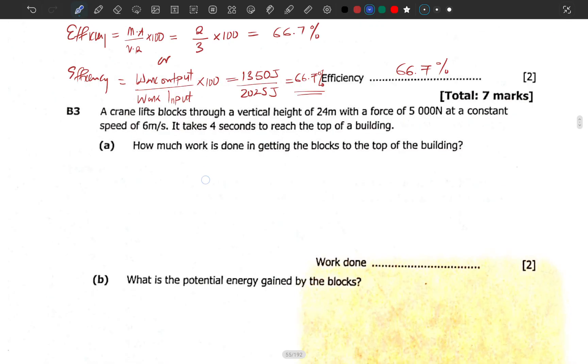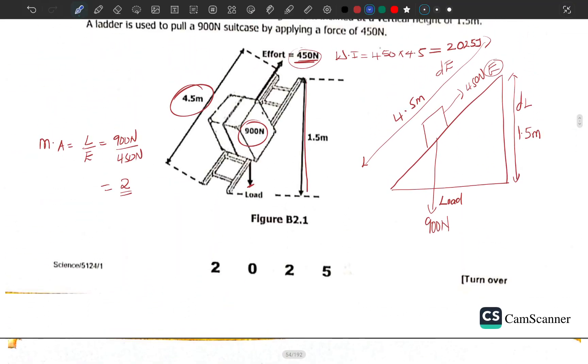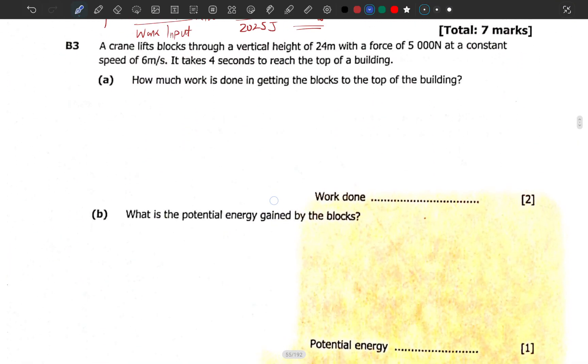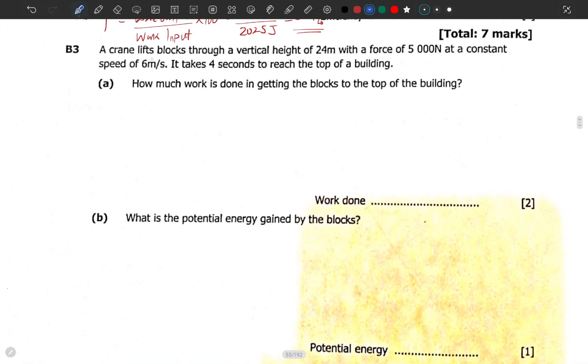We ended on B2. We are now going to B3, which says a crane lifts blocks through a vertical height of 24 meters with a force of 5000 newtons at a constant speed of 6 meters per second. It takes 4 seconds to reach the top of the building.